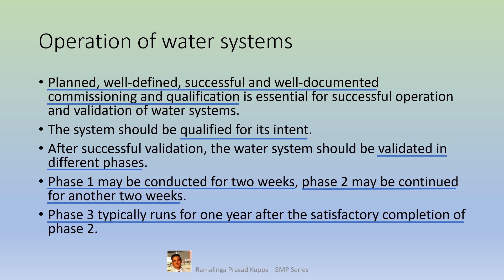Phase 3 typically runs for one year after the satisfactory completion of Phase 2. Running for one year is to consider the impact of quality variations in the input quality of water in different seasons. This is to establish continued reliable performance over extended periods and to ensure that the seasonal variations are